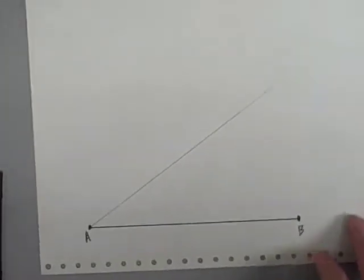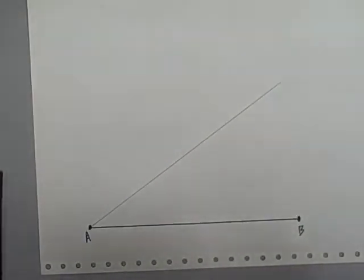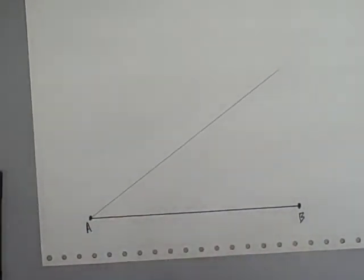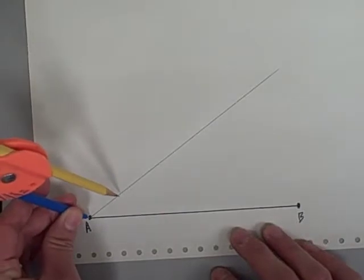And now what we need to do on that ray is we're going to split up the ray into however many parts we are going to split up the original segment into. So if I'm going to split it into five, I need to make five little segments.